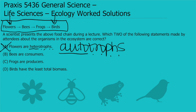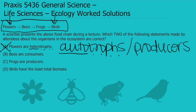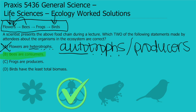Autotrophs are also called producers because they're producing their own food. Answer B says bees are consumers. A consumer is an organism that eats other things to get the energy it needs to stay alive. Bees consume things from flowers and plants in order to get the energy they need, so that is a correct answer — bees are consumers.